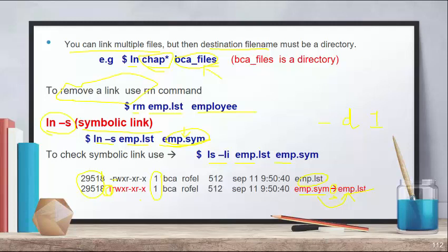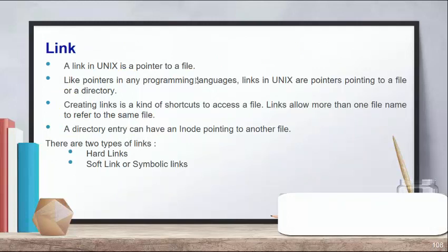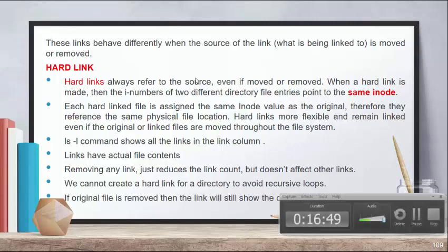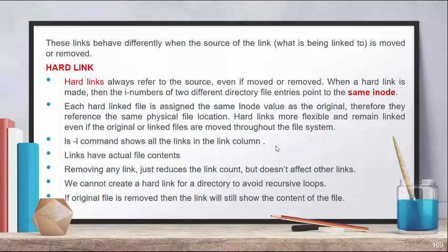So, what is a link? A link is a file pointer that connects to your file. If you link one file to another, any changes you make in that particular file will be reflected in the other. Types of links: hard link and soft link (also called symbolic link). In a hard link, it creates a different file with all the content of the original, and if you remove the original, the linked file still shows the content.